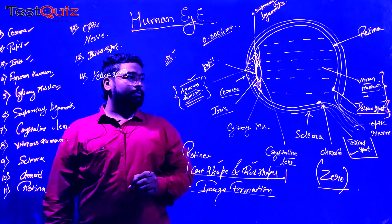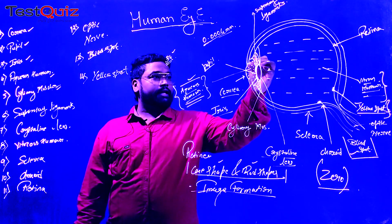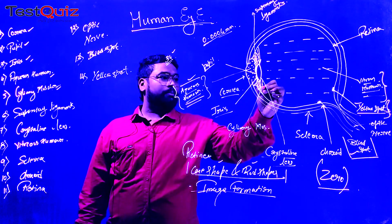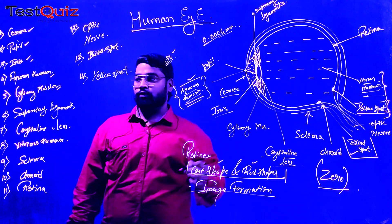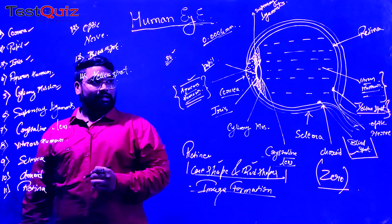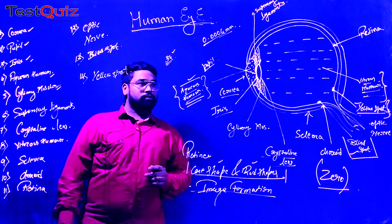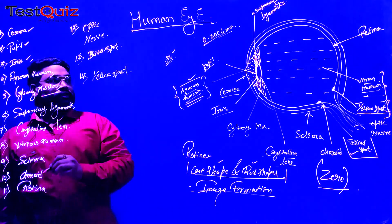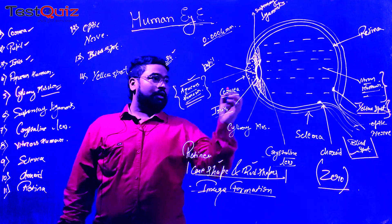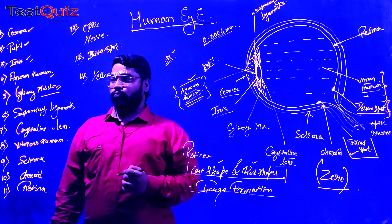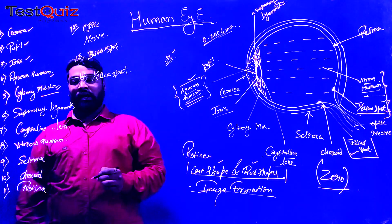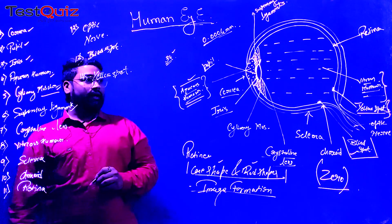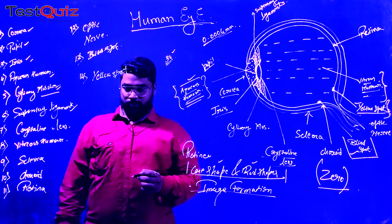Next is the ciliary muscles. These particular muscles are the ciliary muscles. Ciliary muscles give structural support to the crystalline lens. If the structural support to the crystalline lens is not there, it will not have particular support. The additional support to the ciliary muscles is given by the suspensory ligament.